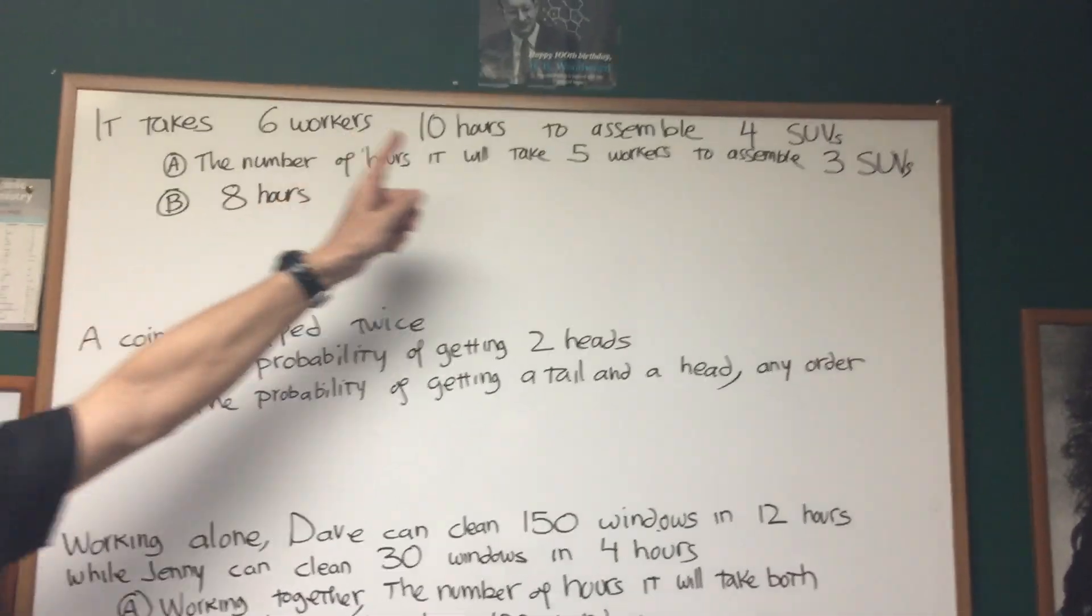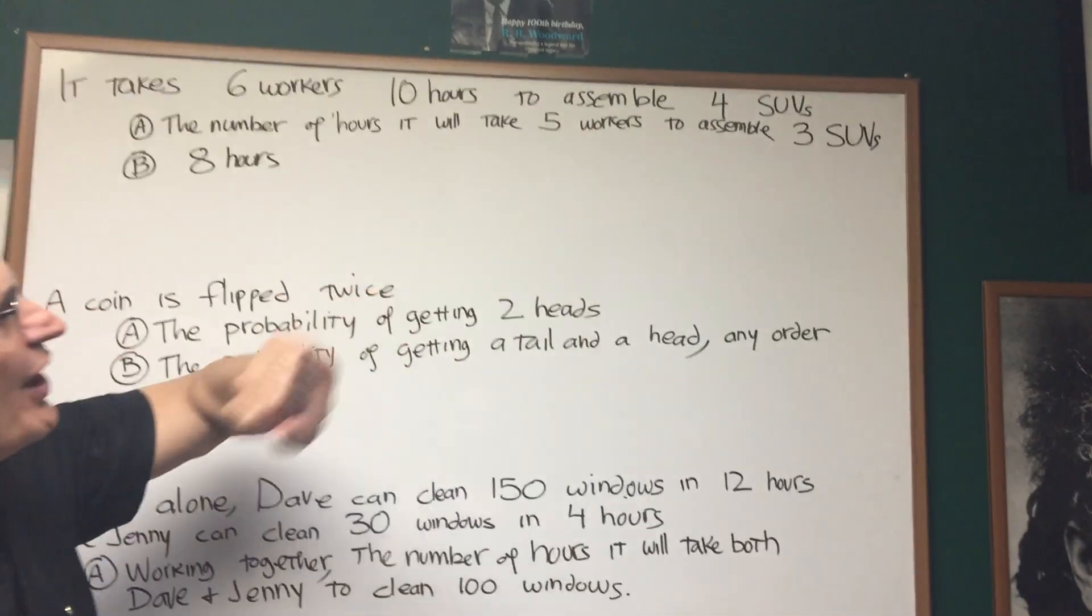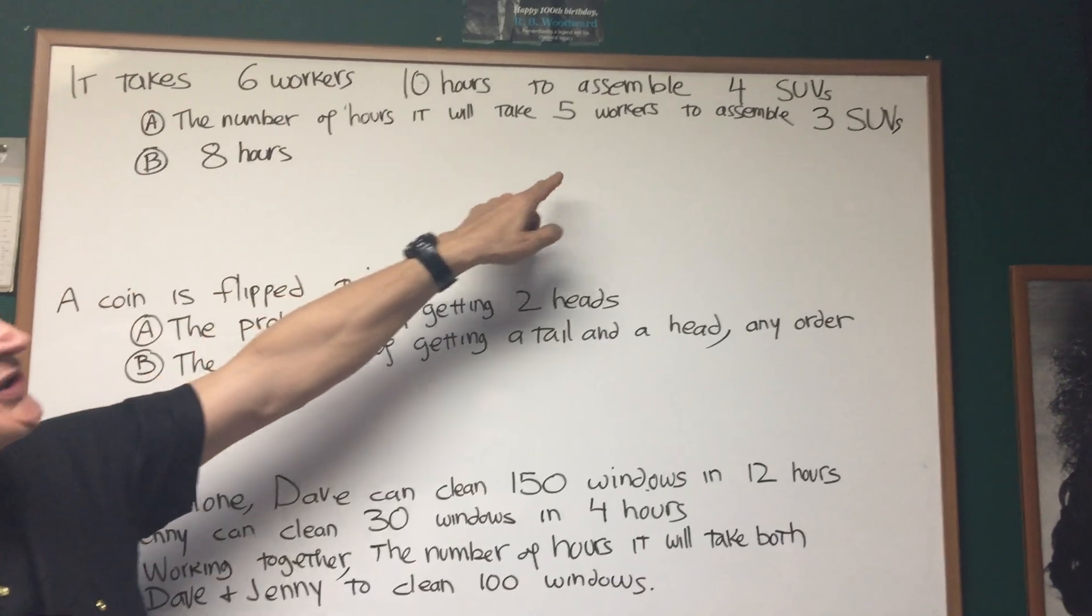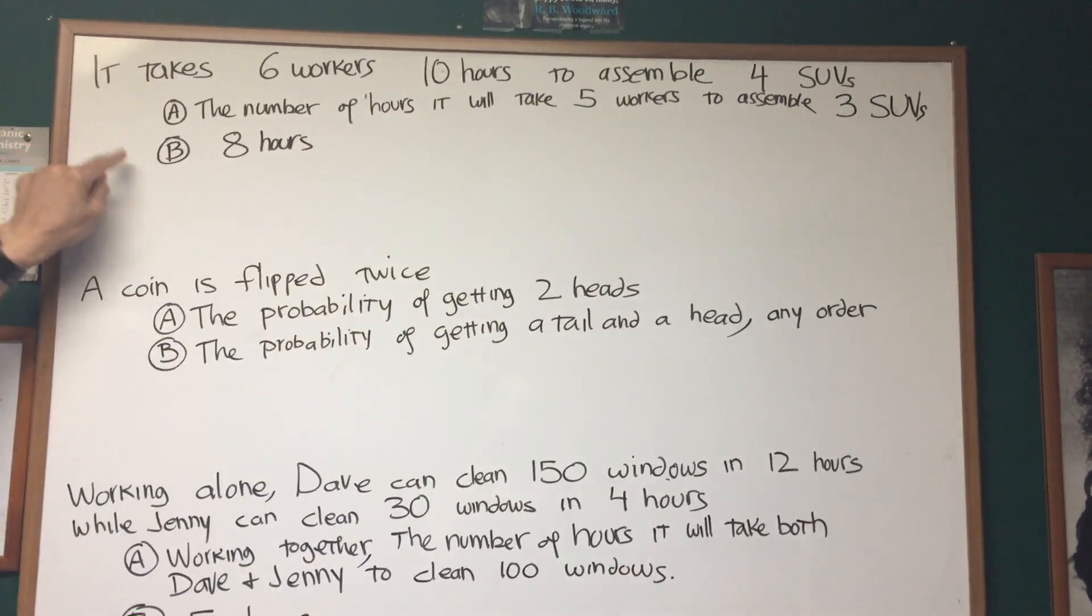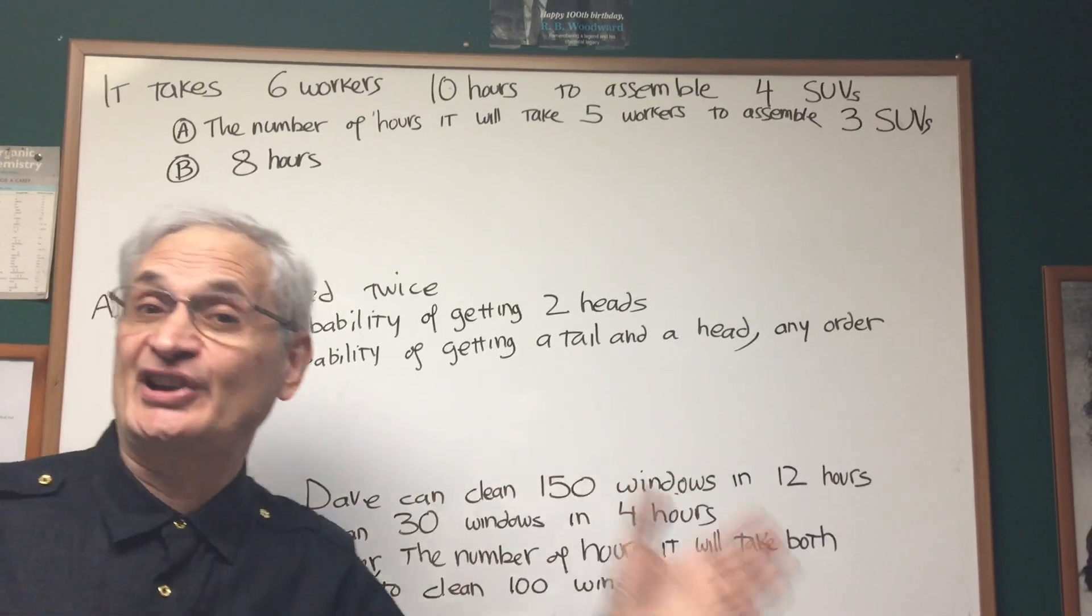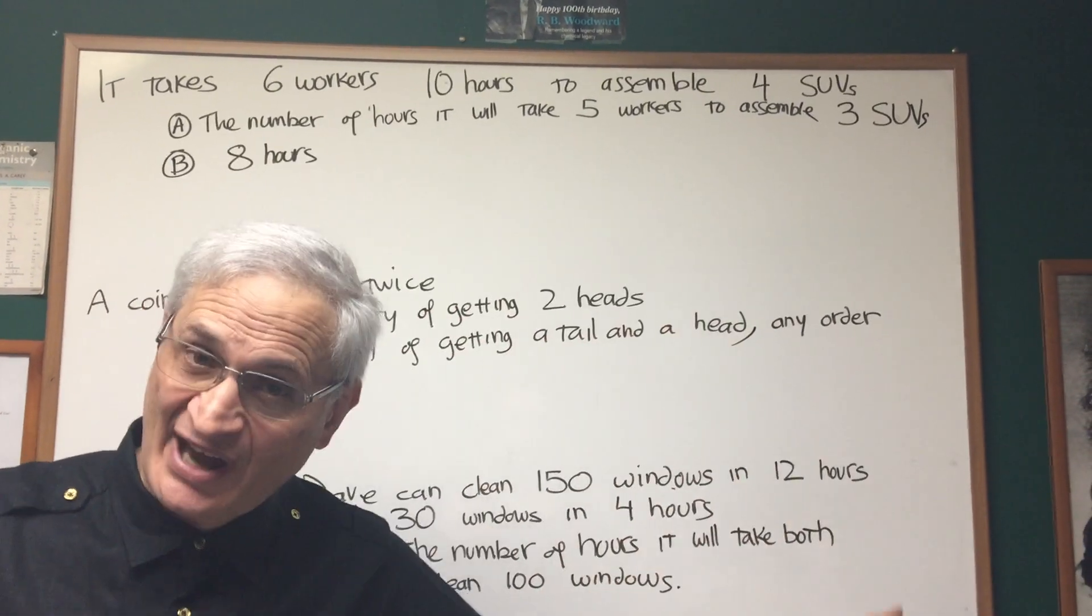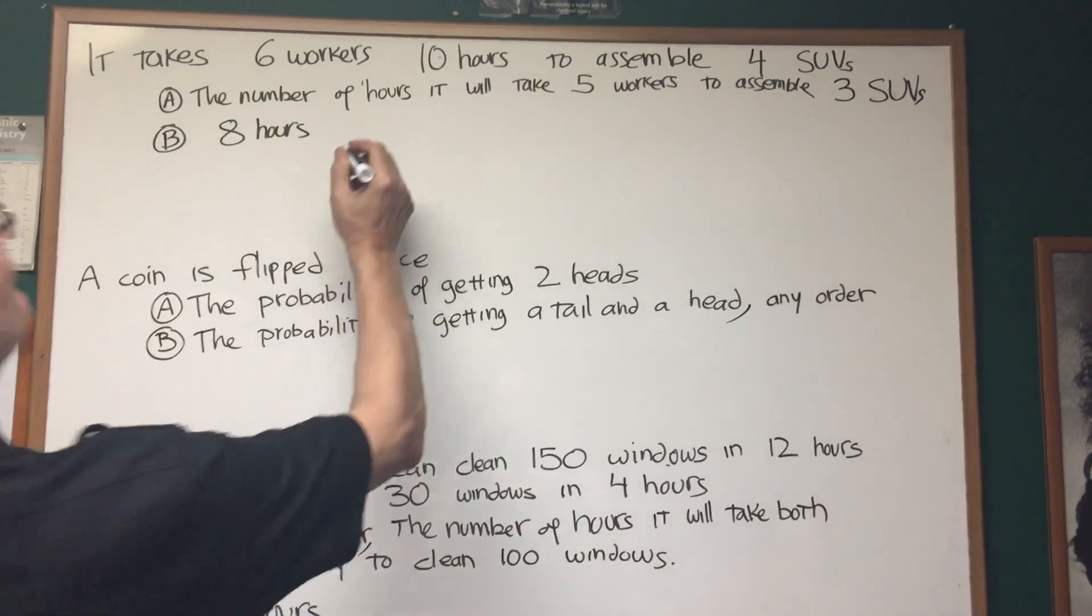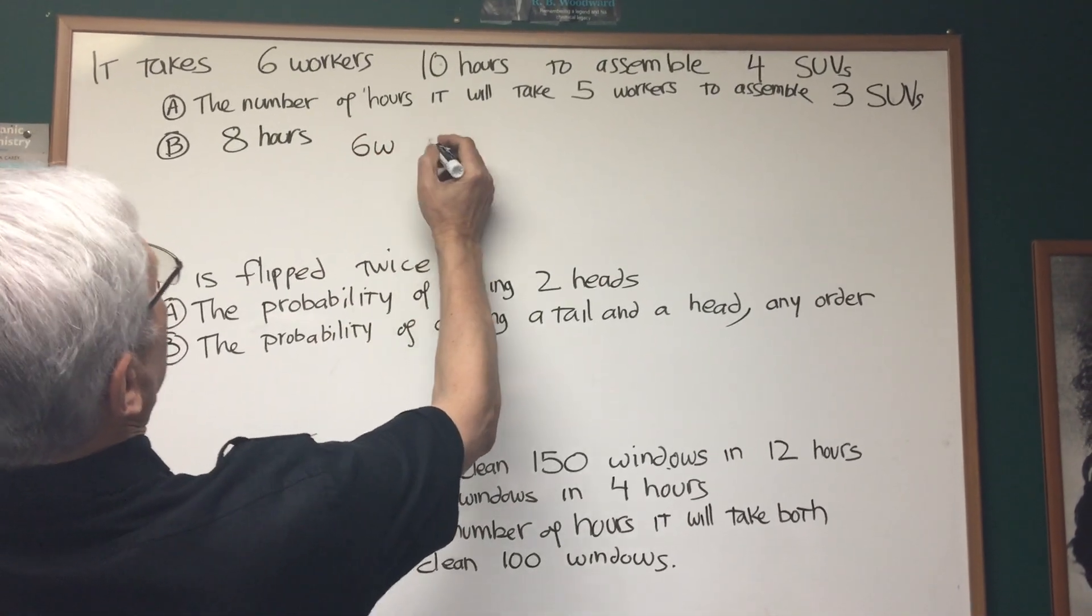It takes six workers ten hours to assemble four SUVs. A, the number of hours it will take five workers to assemble three SUVs. Or B, eight hours. This is the kind of problem where you can see it in high school and you say, shoot me now, right? Well, there's an easy way to approach this. Let's make a little table here. Let's figure this out logically.